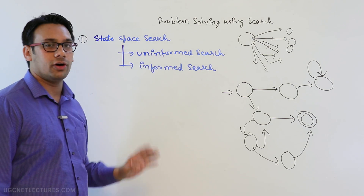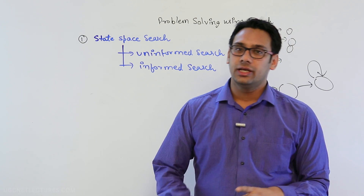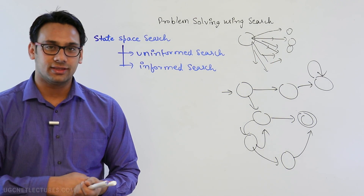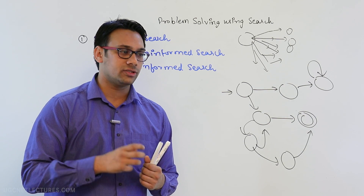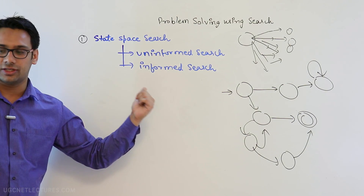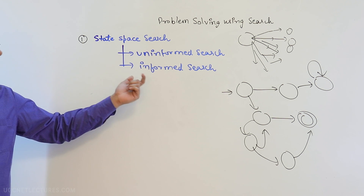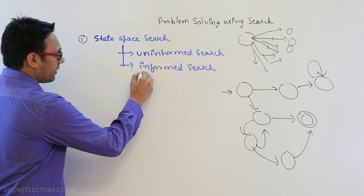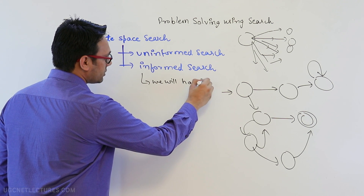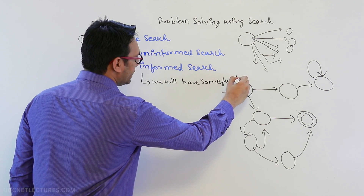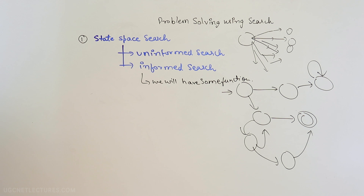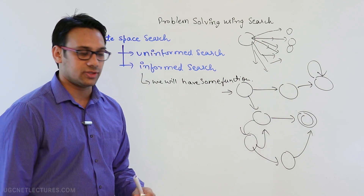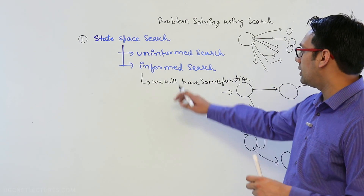In informed search, we have knowledge about the domain of a specific problem and we utilize that knowledge to reach the goal state. In informed search, we have functions to guide the search procedures, and we also study algorithms for heuristic search. These functions allow us to efficiently reach the goal solution state.